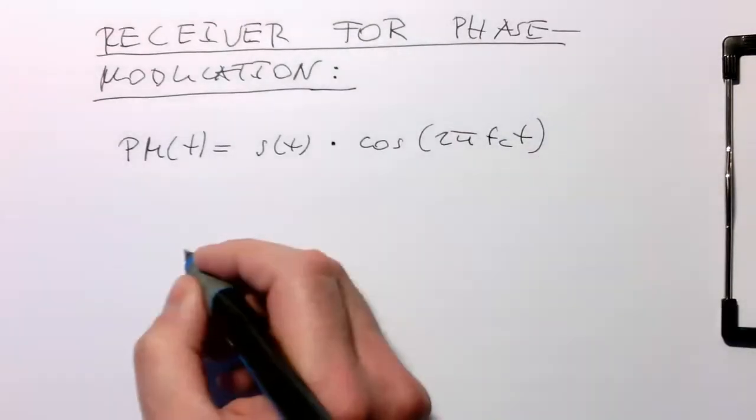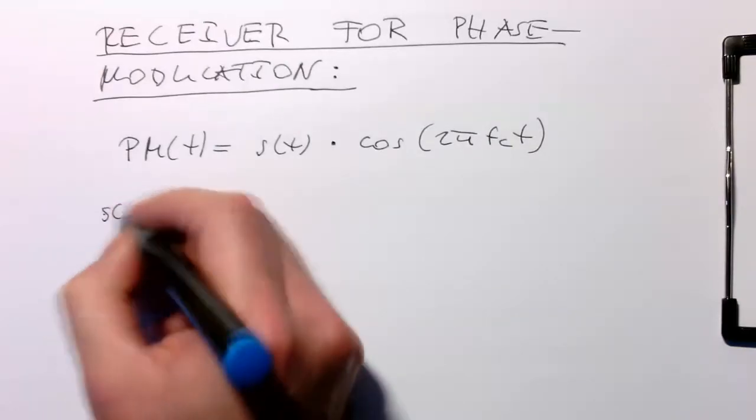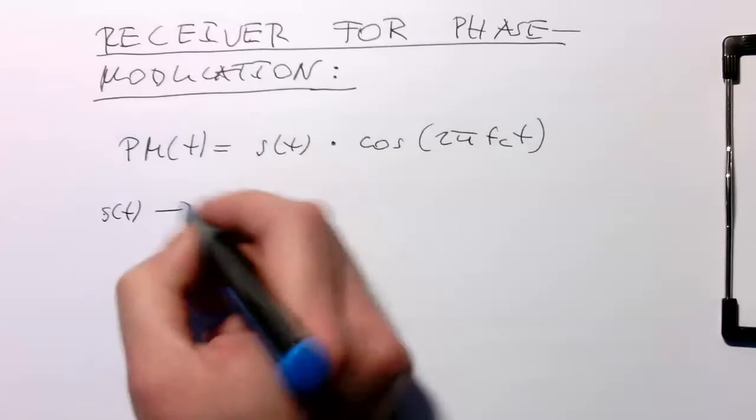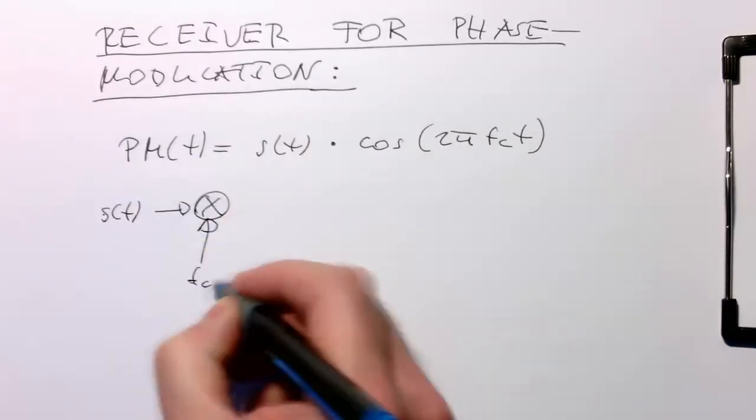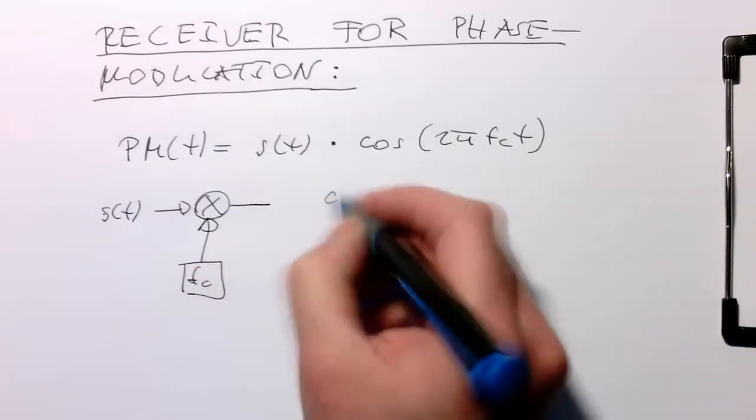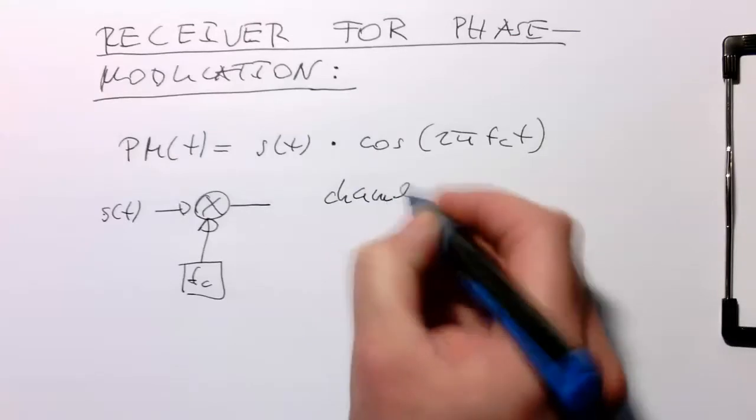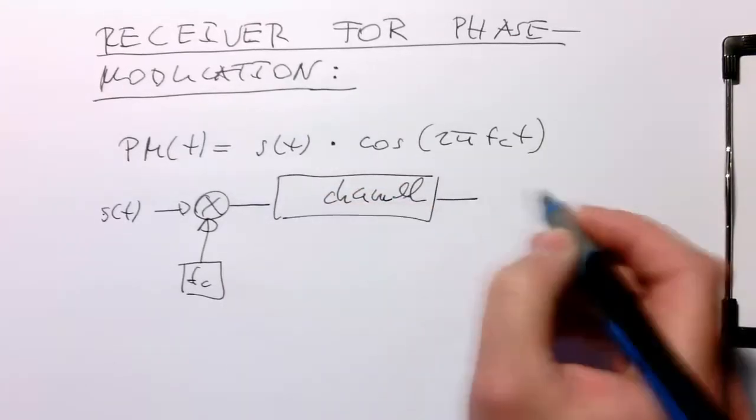This was our transmitter. If we have our s(t) in a diagram, we multiply this with the carrier frequency and transmit it through our channel. In this case, let's assume the channel is unity.